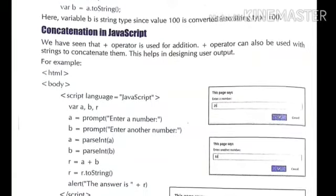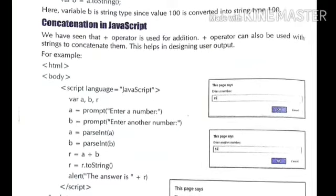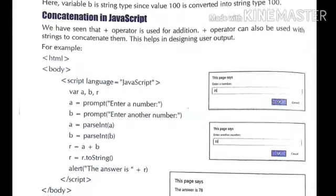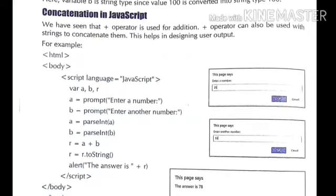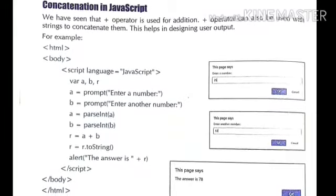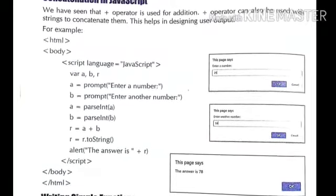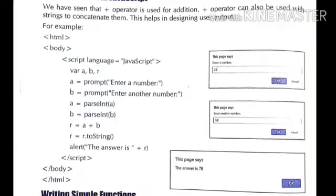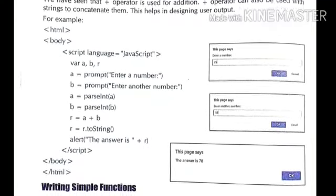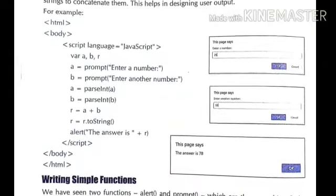Then a equals to parseInt(a) — the value of a is converted to integer using parseInt and stored back in a. Similarly, the value taken from the user in b, which was a string, is converted to integer using parseInt and stored in b. Then r equals to a plus b — a and b are added and stored in r. Then r equals to r.toString() — the calculated result is converted to a string using the toString function.